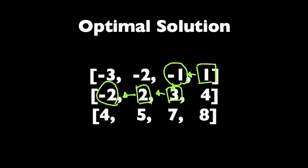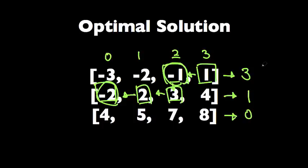For the first row, the position of the last negative number, negative one, is two. So we'll know that the number of negative numbers in this row is just three. Same thing with the second row, the position of the last negative number is zero, so the number of negative numbers is just one. We have zero negative numbers in the last row. We add them up and we get the answer.